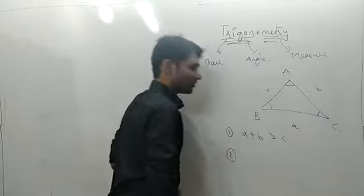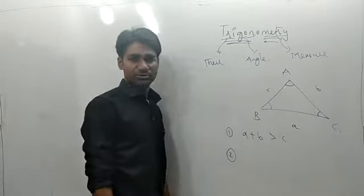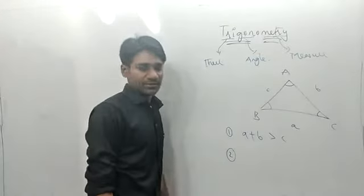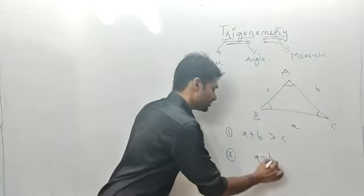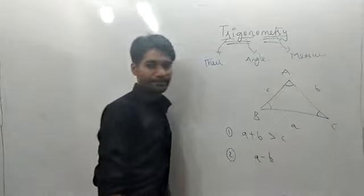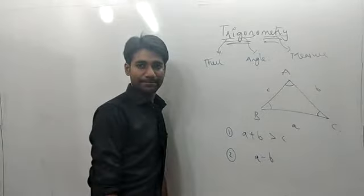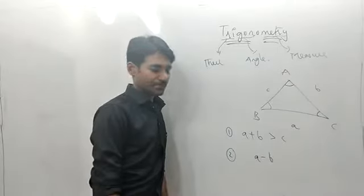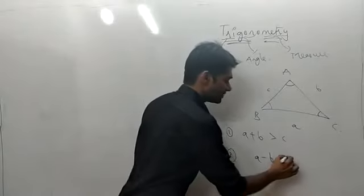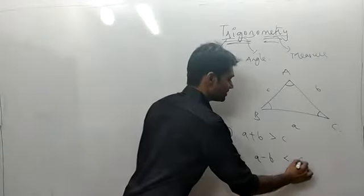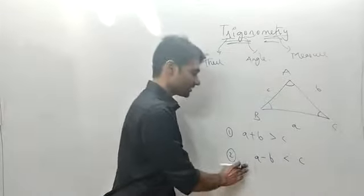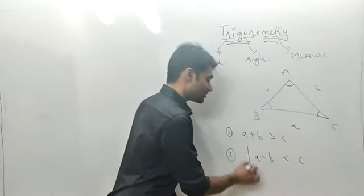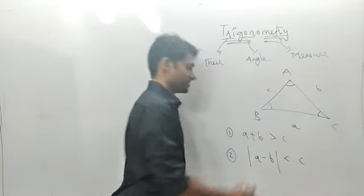The second point we are supposed to know: the difference of any two sides should always be less than the third side. The difference here means the absolute difference, since A could be greater than B or A could be smaller than B. So the magnitude of difference is always less than the third side.